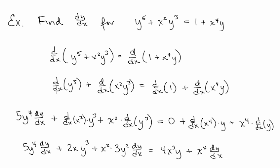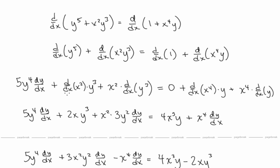For the derivative of y⁵ with respect to x, since y depends on x this is a chain rule: bring down the 5 to get 5y⁴, then multiply by dy/dx — and that happens every time you take the derivative of a y term. For x²y³, we use the product rule: derivative of x² times y³, plus x² times the derivative of y³. The derivative of x² is 2x, the derivative of y³ is 3y²·dy/dx. For x⁴y, derivative of x⁴ is 4x³, and derivative of y is dy/dx.